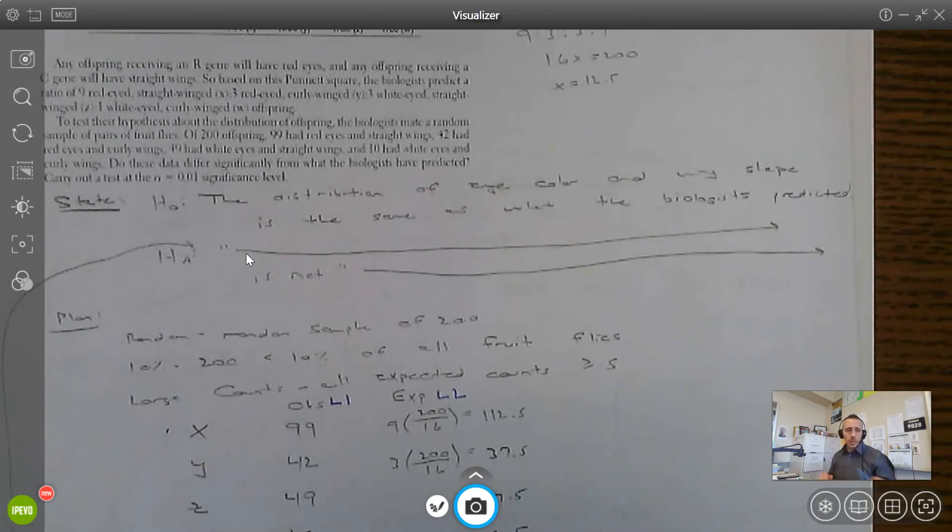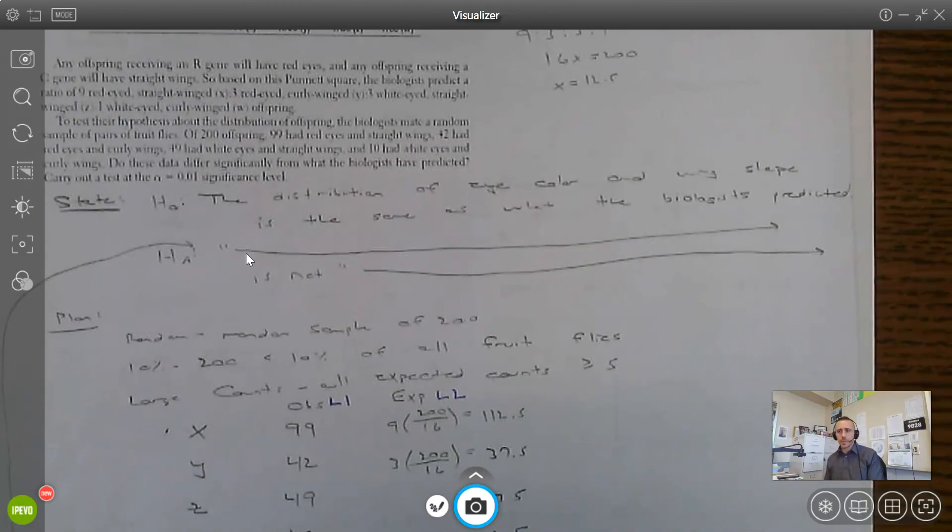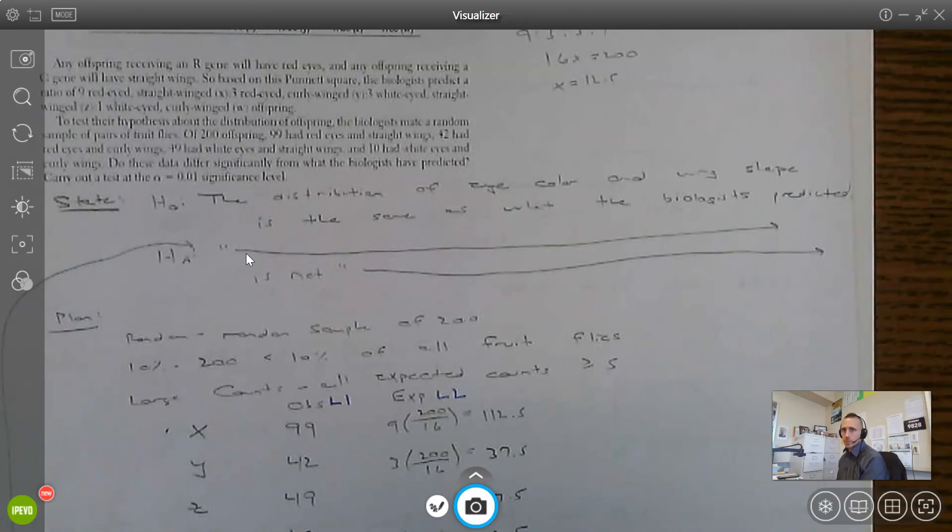All right, that's it for section 11.1 chi squared goodness of fit test. Hopefully you found these videos informative and you feel pretty confident moving forward on how to do a test. All right, have a good day all.